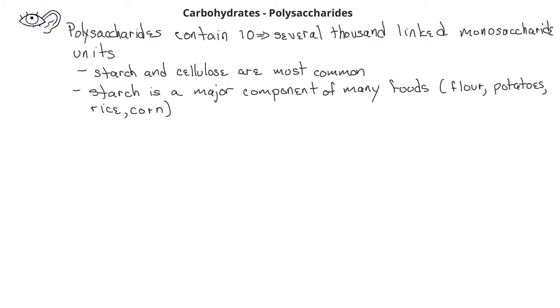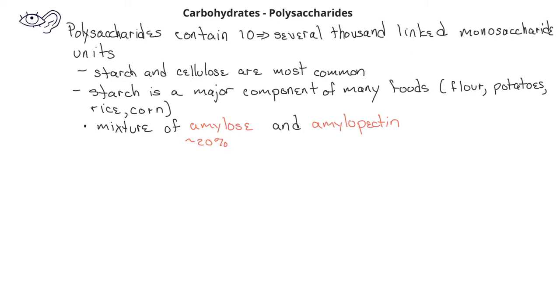Starch is a mixture of two different polysaccharides. Amylose comprises about 20% of starch, whereas amylopectin comprises about 80% of starch.